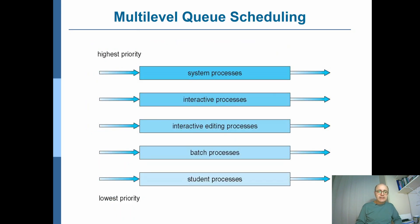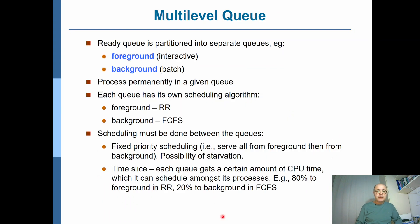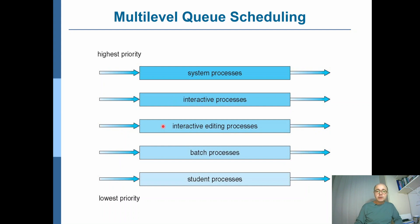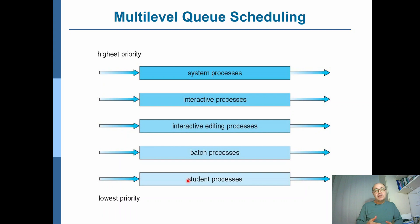With fixed priority scheduling, you can have several different priority queues. For example, system processes always take precedence over interactive processes because they are more important. Interactive processes take higher priority compared to interactive editing processes, then batch processes have lower priority, and in this textbook example, student processes have the lowest priority. That would mean student processes would typically starve in such a system.